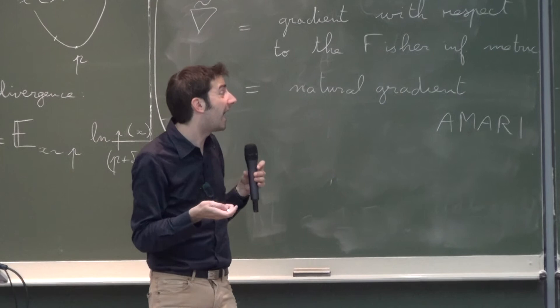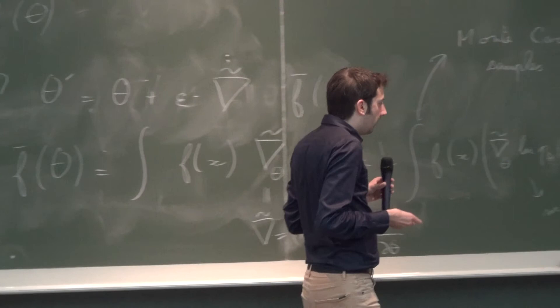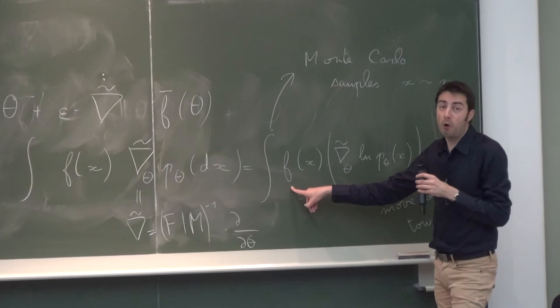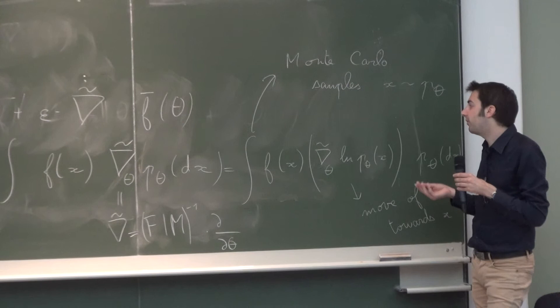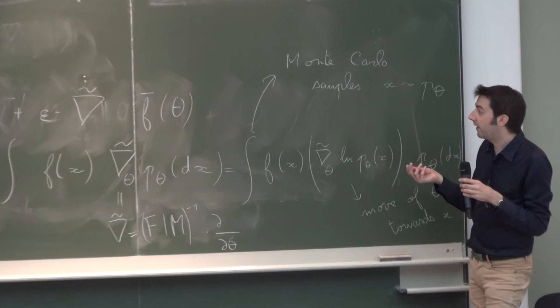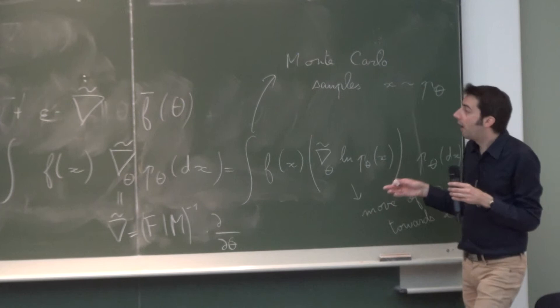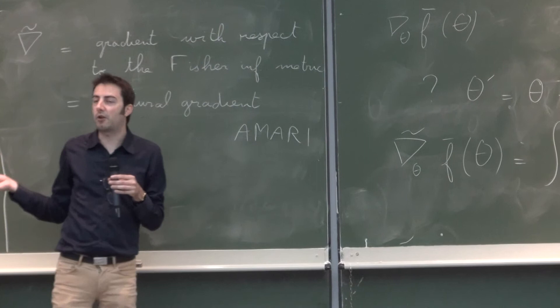One more thing: you will notice there is no derivative at all with respect to f, which is a bit surprising. This is why, in my opinion, these kinds of approaches work better — you have a regularizing effect. You integrate f against p_theta, and if f is not smooth, the function f-bar will be smooth as a function of theta because you are integrating — you take a convolution with a Gaussian or similar — and so this is regularizing.